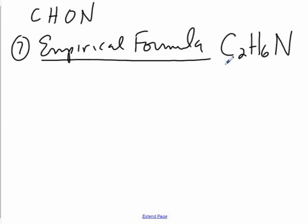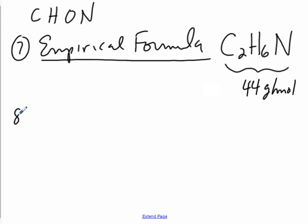If you grab your periodic table and find this formula's molar mass: 2 times 12 for carbon, plus 6 times 1 for hydrogen, plus 14 for nitrogen — that adds up to about 44 grams per mole. That's the empirical molar mass. The last step is to find the molecular formula.